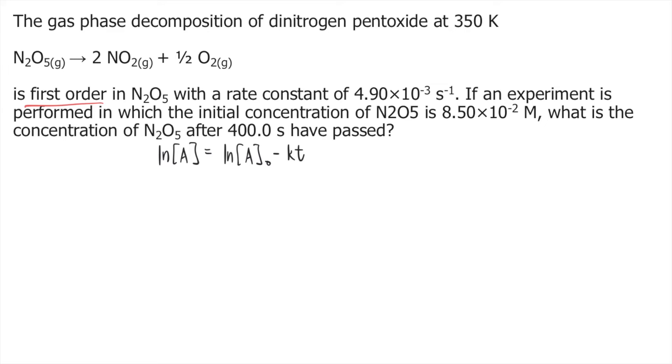So A is the final concentration, A₀ is the initial concentration, minus k is the rate constant, and t is the time that have elapsed.